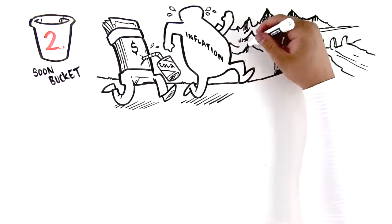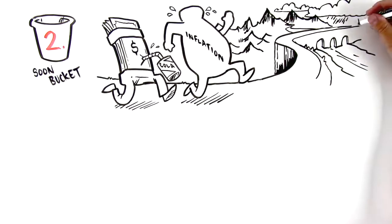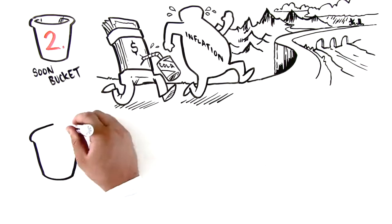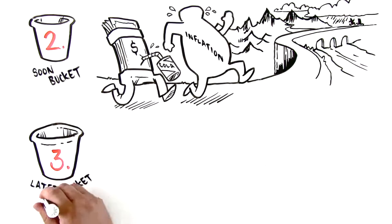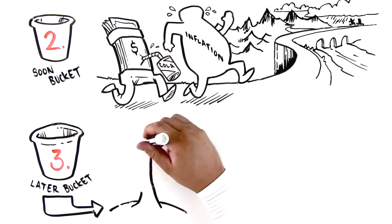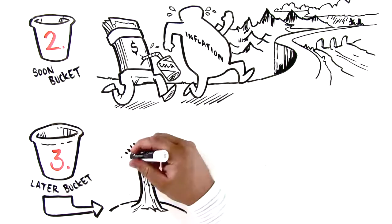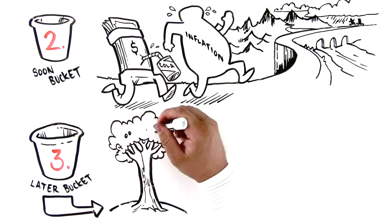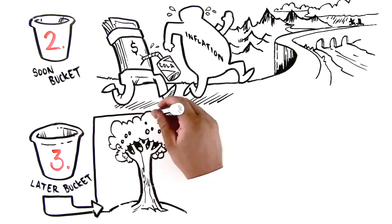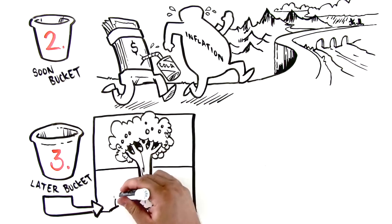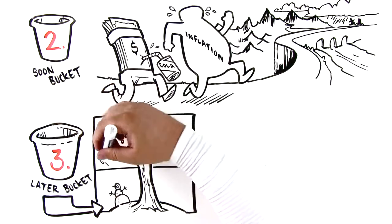Lastly, there's the later bucket. This is your long-term growth and legacy planning money. There's more growth opportunity than in buckets one and two because it's invested for the long term. You have bought a time horizon with the now and soon buckets and may be willing to take on more volatility knowing you have plenty of time before you plan to use this money.